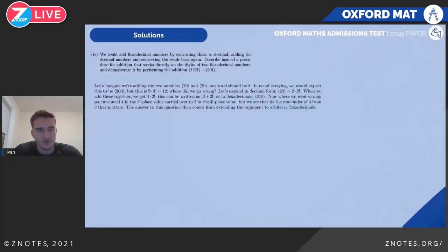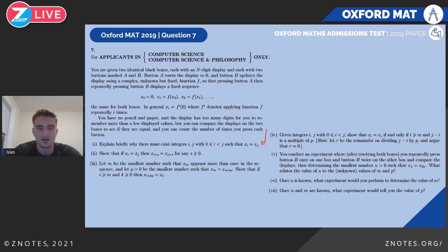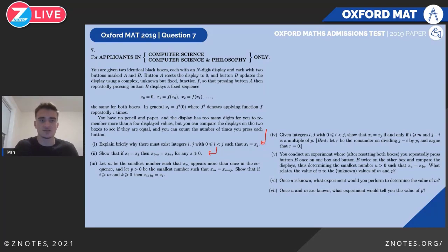We haven't finished all the flexidecimal questions, but the remaining parts I encourage you to try yourself — they're not too difficult, just apply the process we've described. Now for the last question, question seven, which is for computer science and philosophy. This is another example of a recurrence. We have an integer display on two identical boxes; button A resets it to zero and button B applies a fixed but apparently complex function.